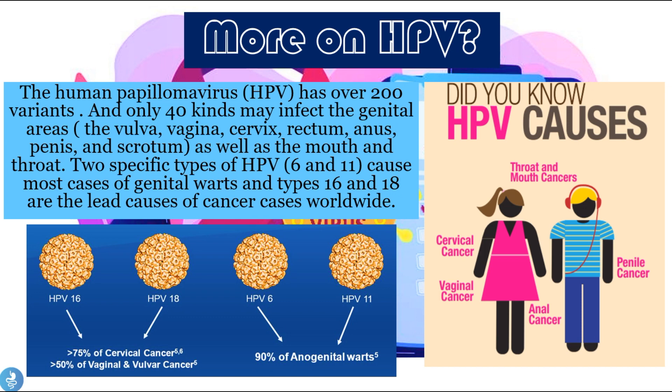Two specific types — HPV 6 and 11 — cause most cases of genital warts, and types 16 and 18 are the leading causes of cancer cases worldwide. HPV 6 and 11 are responsible for the development of warts in the anal-rectal region, accounting for over 90% of anal-genital warts.